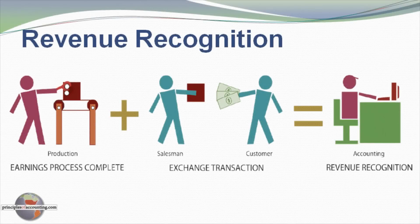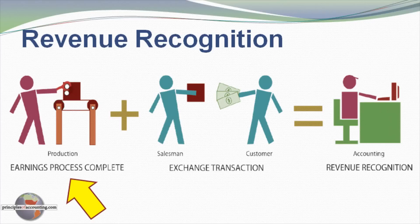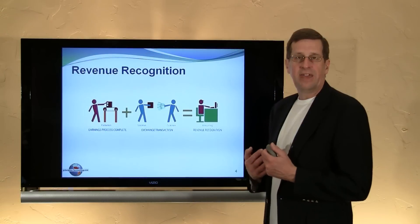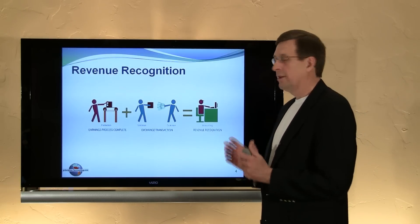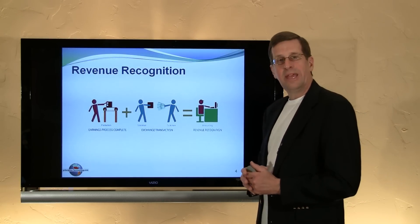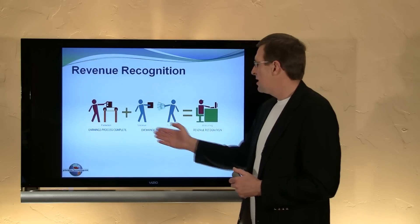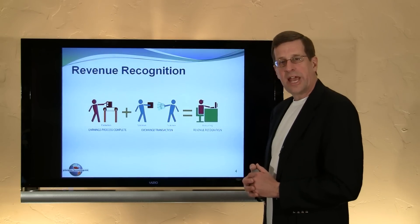Let's consider an illustration of revenue recognition. Here we have an individual who is engaging in a production activity. Before revenue can be recognized, the earnings process must be complete. In this case, production of the particular item must be completed. It's not enough to have a firm order from a customer — the goods being sold need to be finished. It's also necessary to have an exchange transaction.